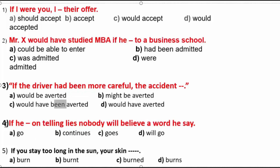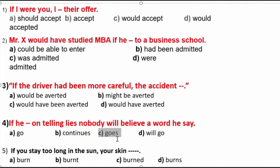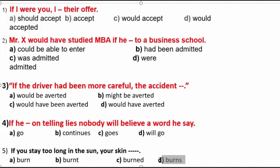Number 4: If he keeps telling lies, nobody will believe him. We can see will in the second clause — so the first clause must be present indefinite. The answer is C number — present indefinite — he goes, because of the subject he. Number 5: If you stay too long in the sun — this is factual. If you stay in the sun, the result is always the same. So the answer is present simple: your skin burns. The answer is T number.